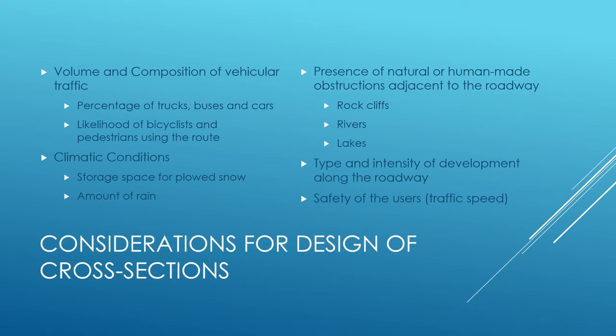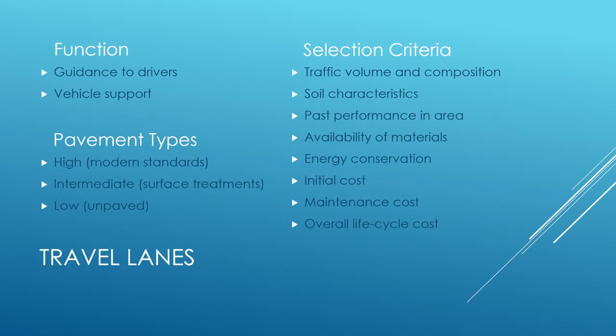The type and intensity of development around the road and the safety of the user are also considerations. Traffic speeds have to be looked at for the type of typical section being created. Then we look at travel lanes — function first, to make sure it'll support the vehicle — and then pavement types.